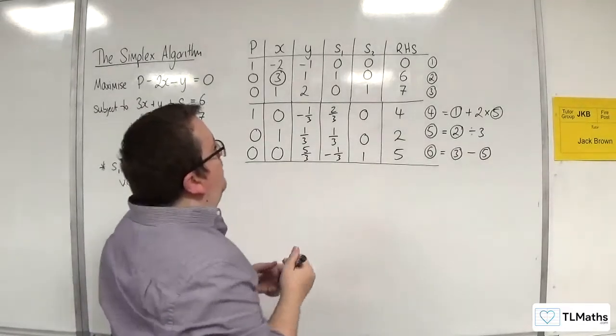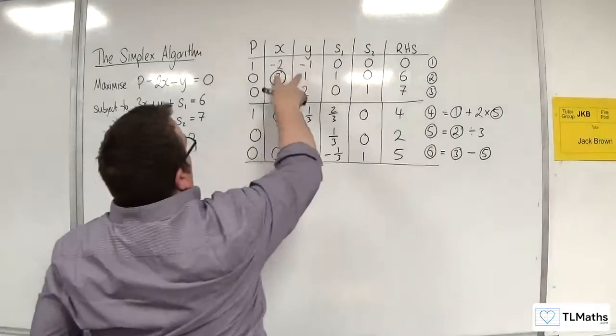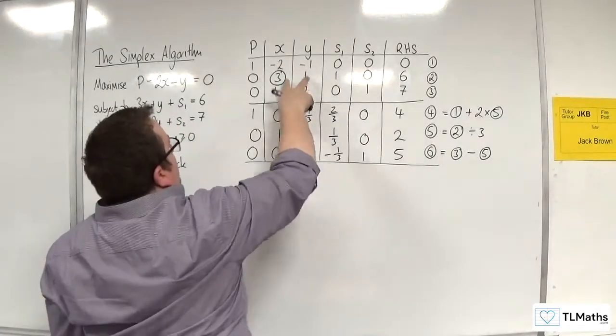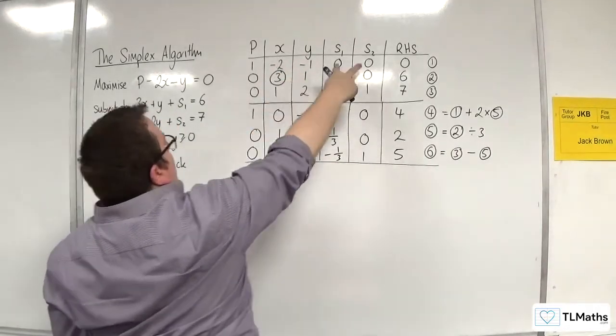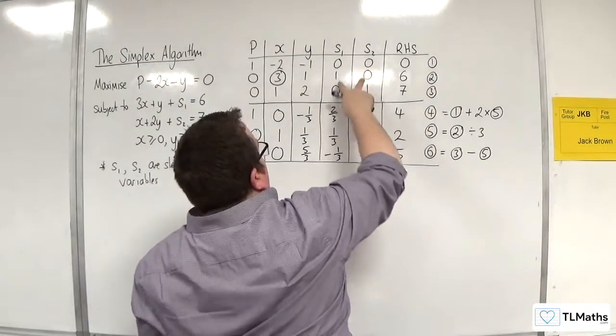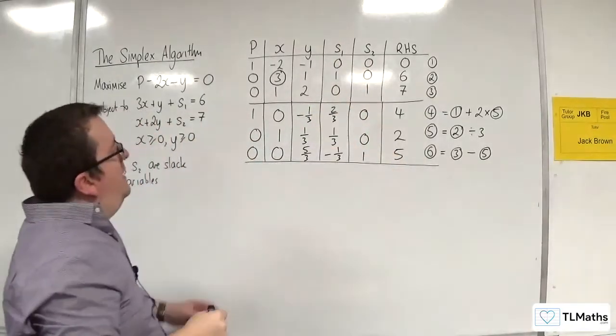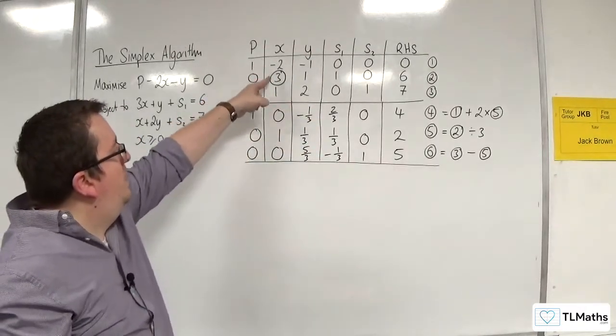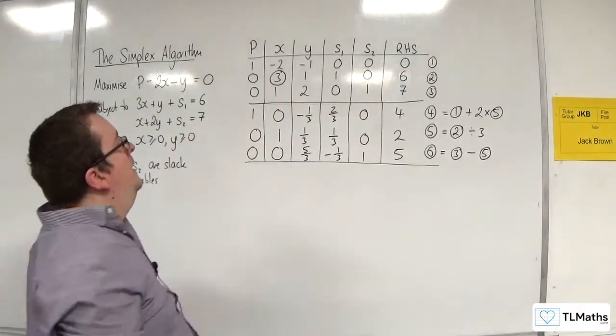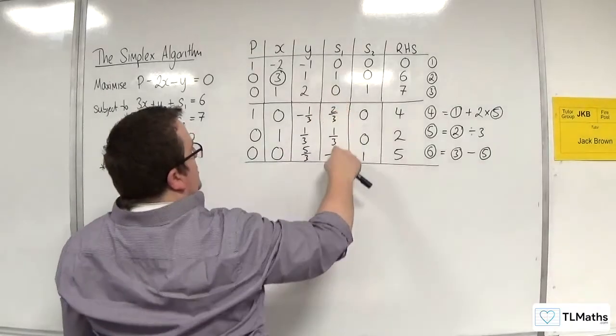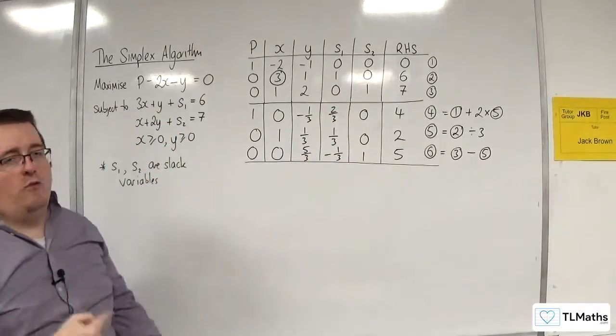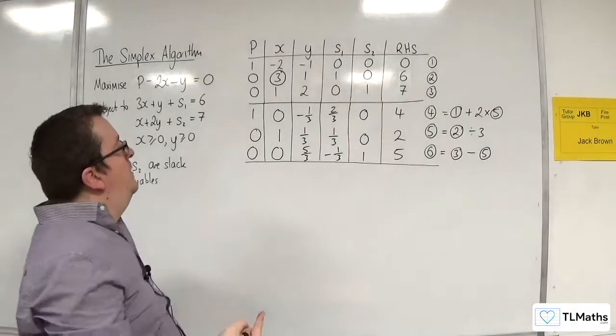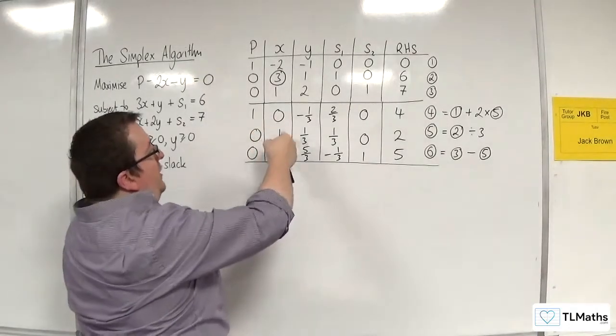So what's happened is that X and Y were non-basic, as can be told because there's loads of stuff there. S1 and S2 started out as basic. What's happened is that I've swapped out X and S1. X becomes basic. And S1 becomes non-basic.